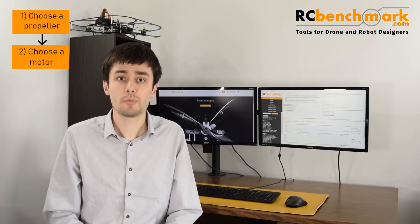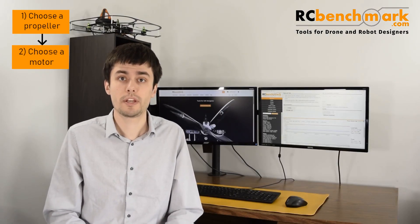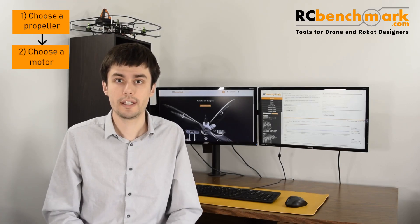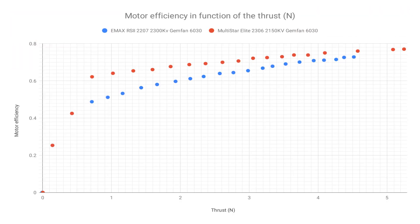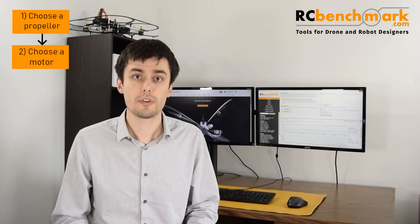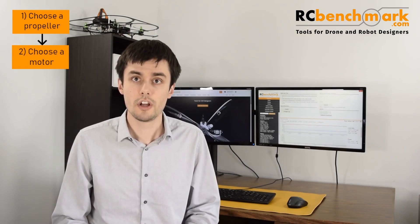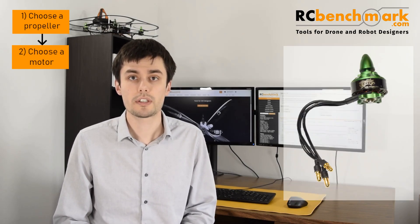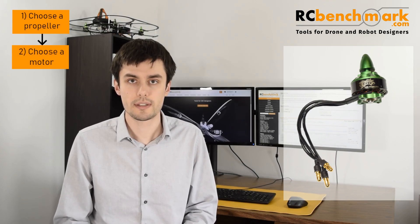I'm using the same process as we did with the propellers to measure and upload the test data to the online database. This graph shows the mechanical efficiency of the tested motors when equipped with a Gemfan 6030. At 1.9 N of thrust, the efficiency of the Multistar is 68%, while the efficiency of the Emax is 60%. Thus, we conclude that for this specific propeller at hover, the most efficient motor is the Multistar Elite 2306.